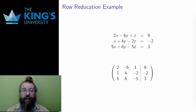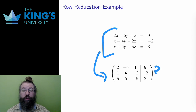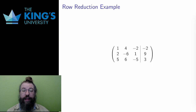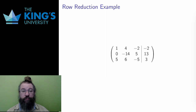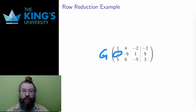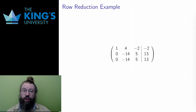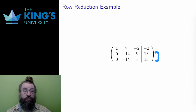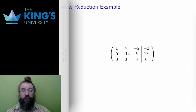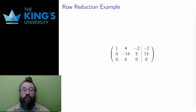One more example — now I'll go through the operations without talking through all the arithmetic. Here is a system and its matrix version. I see there is a leading one in the second row, so since I like to start from the top, I'll exchange the first two rows. Then I clear the entries below this leading one: I subtract two times row one from row two, then subtract five times row one from row three. Now this is interesting — row two and row three are exactly the same. I subtract row two from row three, and this cancels out all of row three. A row of zeros is fine in reduced row echelon form, so I keep going.